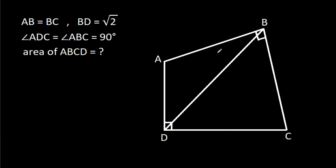In this video, we have been given that AB is equal to BC and BD is square root of 2, and angle ADC is 90 degrees and angle ABC is 90 degrees. Then we have to find the area of ABCD.